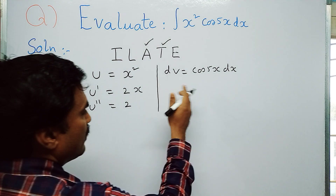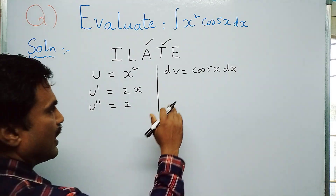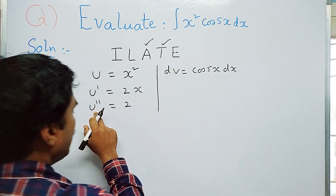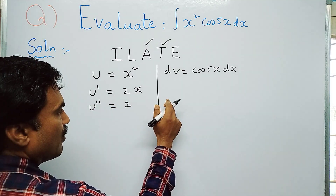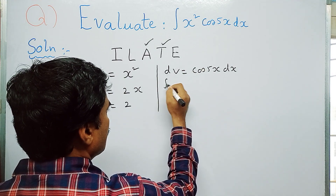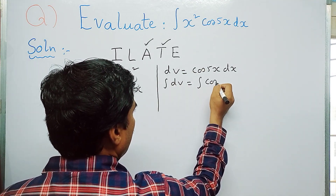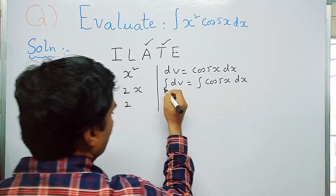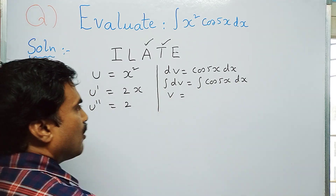On the right-hand side, we simultaneously integrate both sides. Integrating dv: ∫dv = ∫cos 5x dx, so v = ∫cos 5x dx.